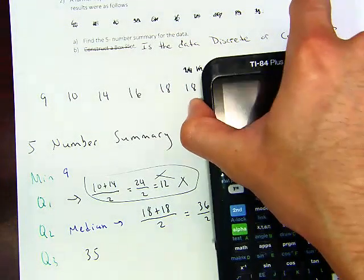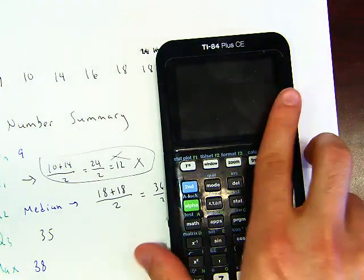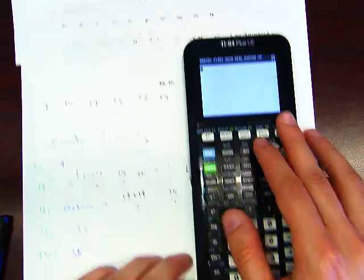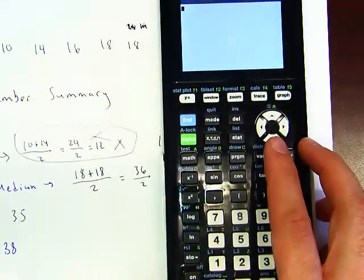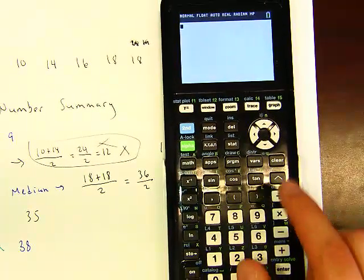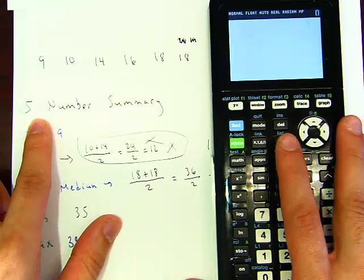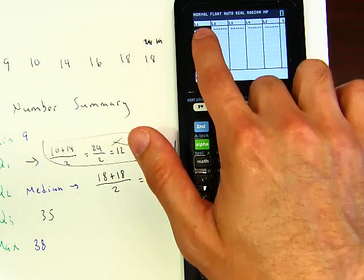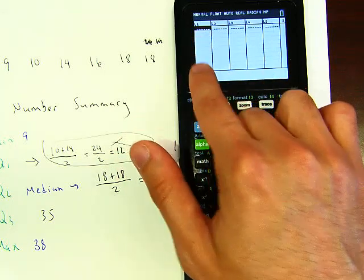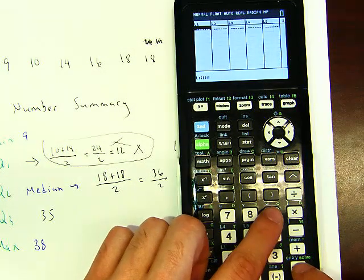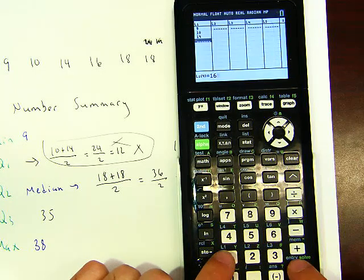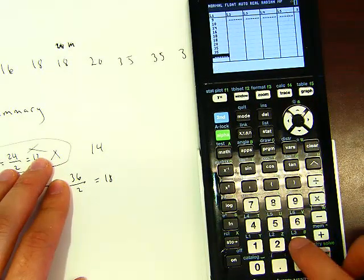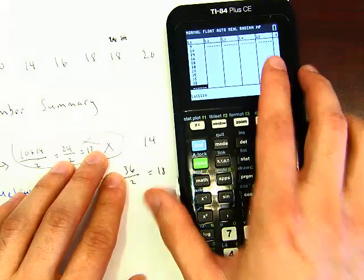If you want to save time on your exam, you can use your calculator. Hit ON, then STAT, then ENTER at Edit. You'll see L1 — enter all the data values: 9, 10, 14, 16, 18, 18, 20, 35, 35, 38. It doesn't even matter if they're in order. Once entered, hit 2nd QUIT to return to the home screen.